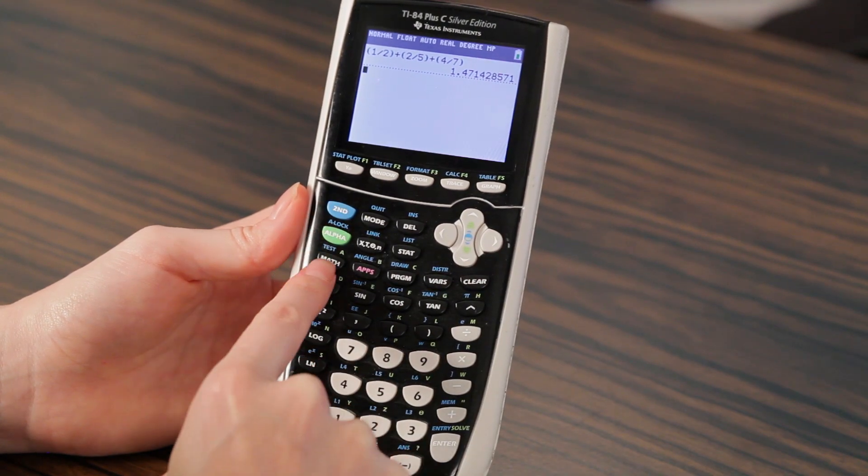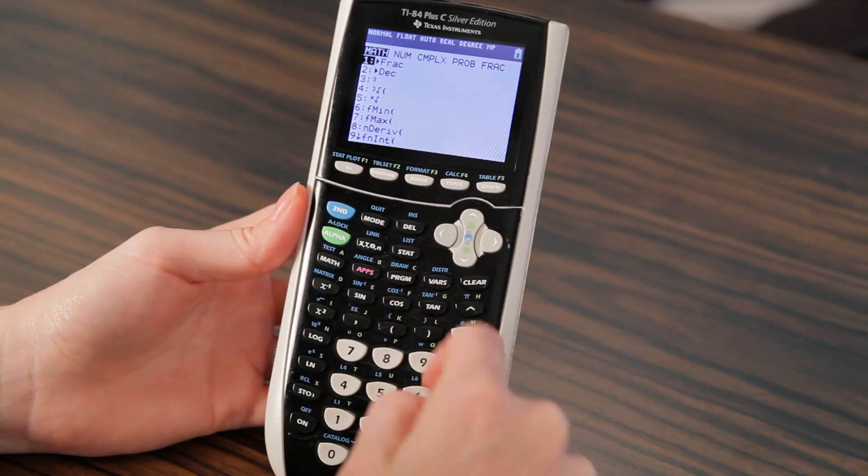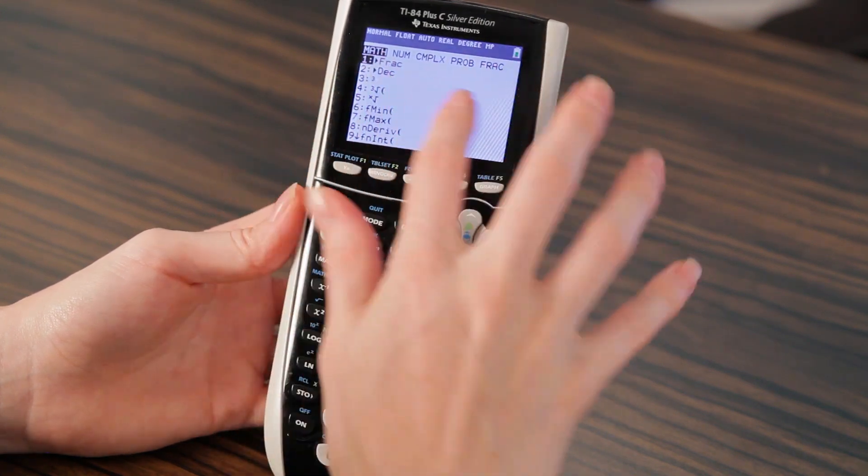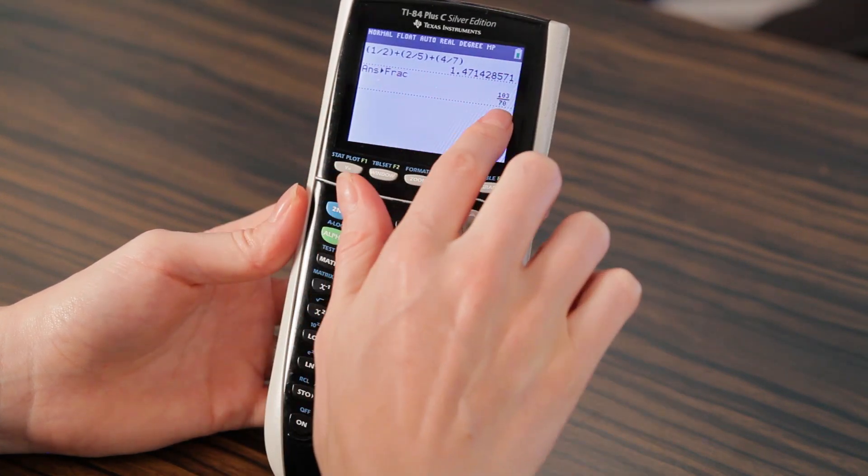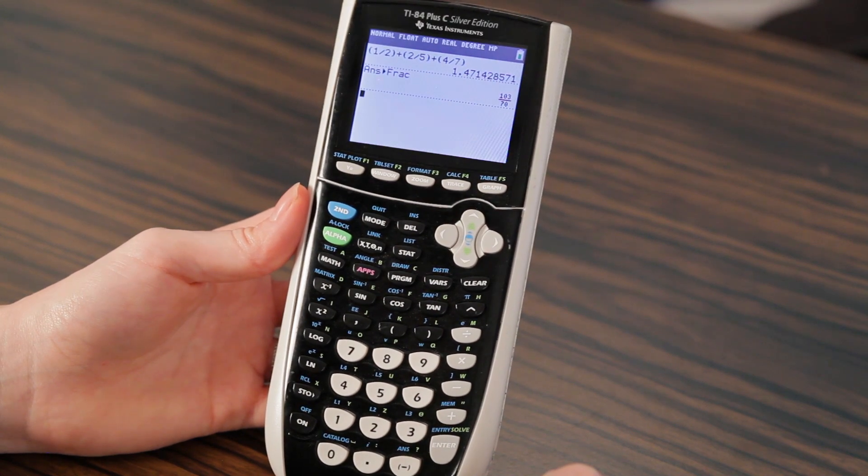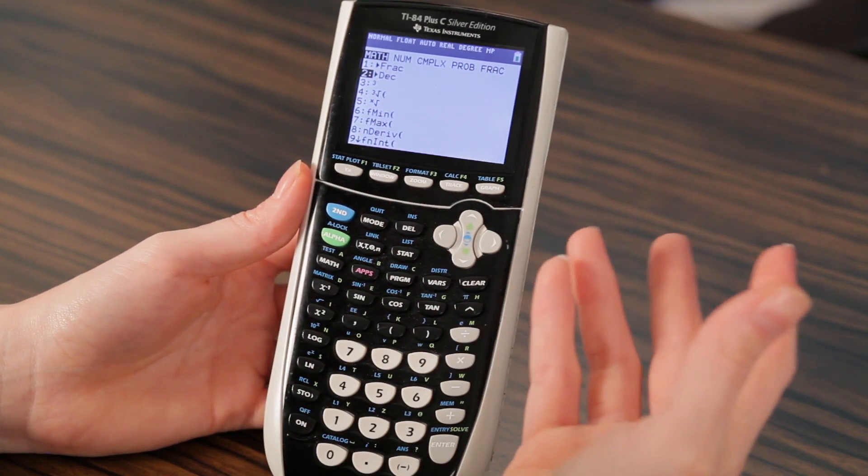Here's how it works. You go to the math key, which is one, two down from your second key right there. If you click on that, you'll see frac with a little arrow next to it at number one. You can click the one button or arrow up to it, then press enter, and it converts your answer into a fraction. So we see this as 103 over 70 in fraction form, and how awesome is that. You can also do this to decimal form if you have something in a fraction you want to turn back to decimal. That's dec, which is right under frac. So really cool, neat, fun, awesome trick: frac.